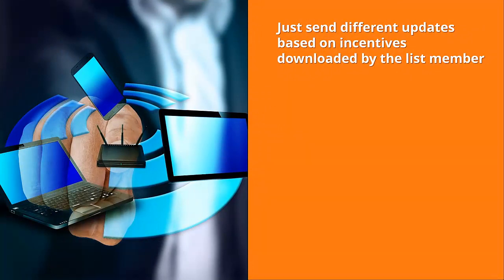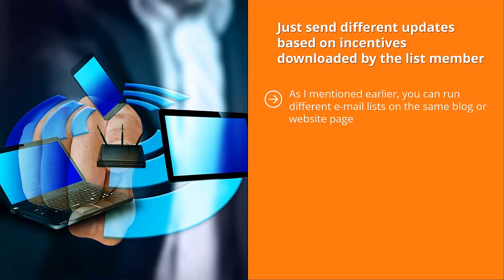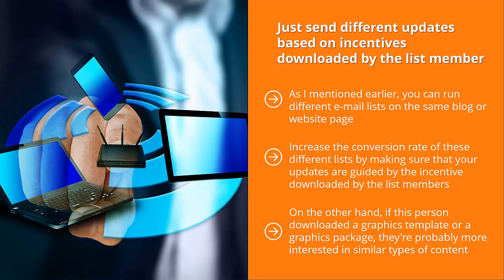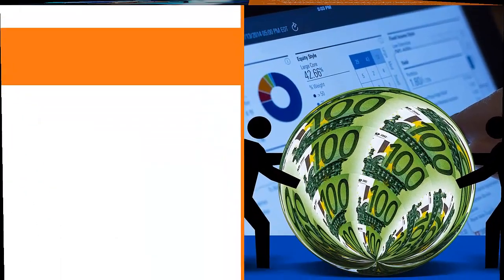Send different updates based on incentives downloaded by the list member. You can run different email lists on the same blog or website page, and when people click these ads to sign up, they're actually signing up to different email lists offering different incentives. Increase the conversion rate by making sure your updates are guided by the incentive downloaded by the list member. For example, if the list member downloaded a video, chances are they would want to watch other videos. On the other hand, if they downloaded a graphics template or package, they're probably more interested in similar content. Make sure your updates speak to these different incentive preferences to maximize your sales conversions.